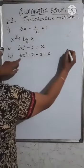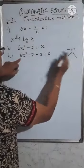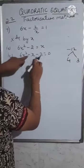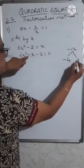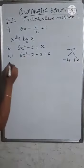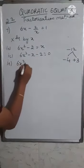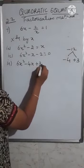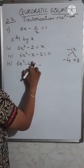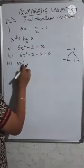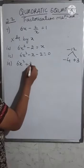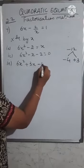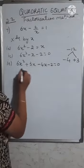Now find the factors. Taking the product of first and last: 6 × (-2) = -12. The factors are 4 and 3 (since -4 + 3 = -1), giving opposite signs. So we rewrite as 6x² - 4x + 3x - 2 = 0.